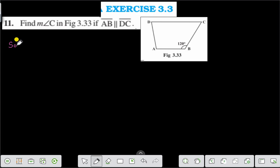Here we solve this problem in this way. AB is given as parallel to DC and CB is the transversal. Now, angle C and angle B are on the same side of the transversal.